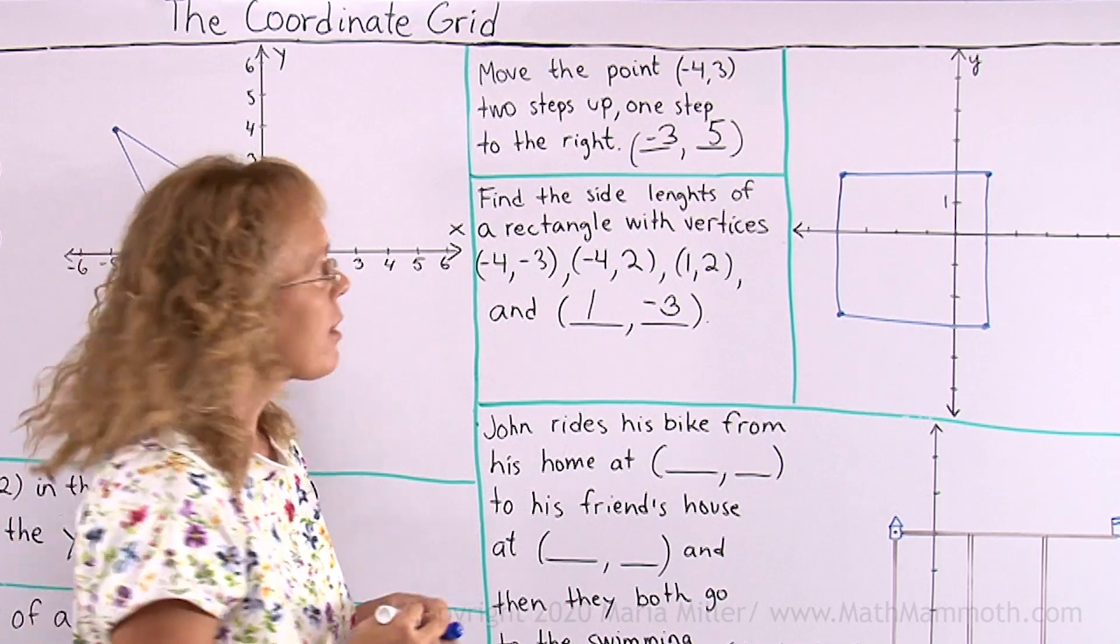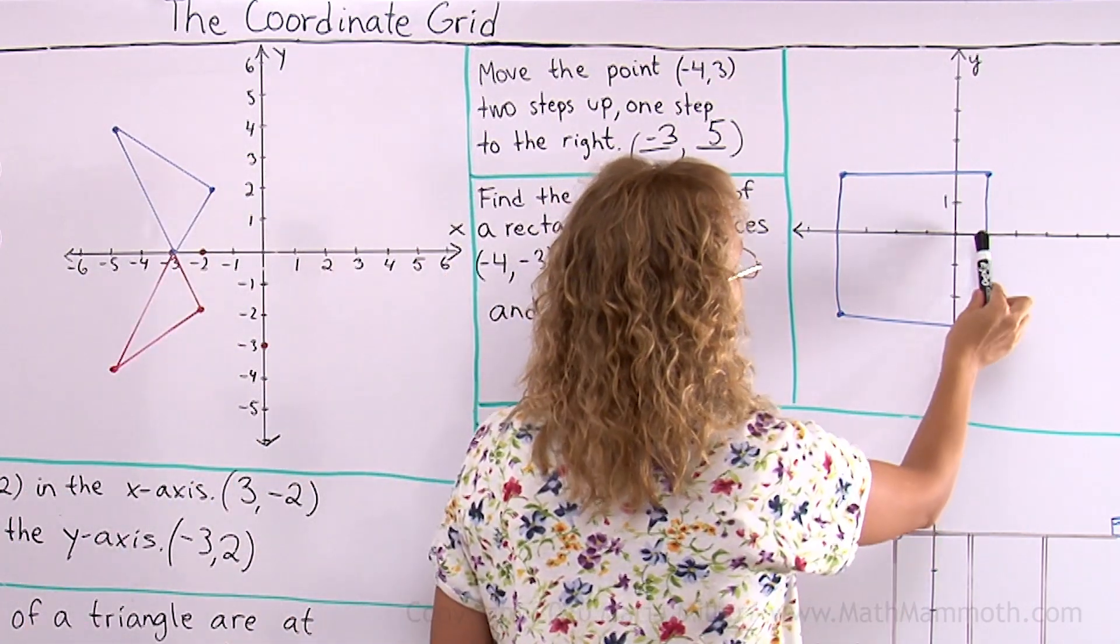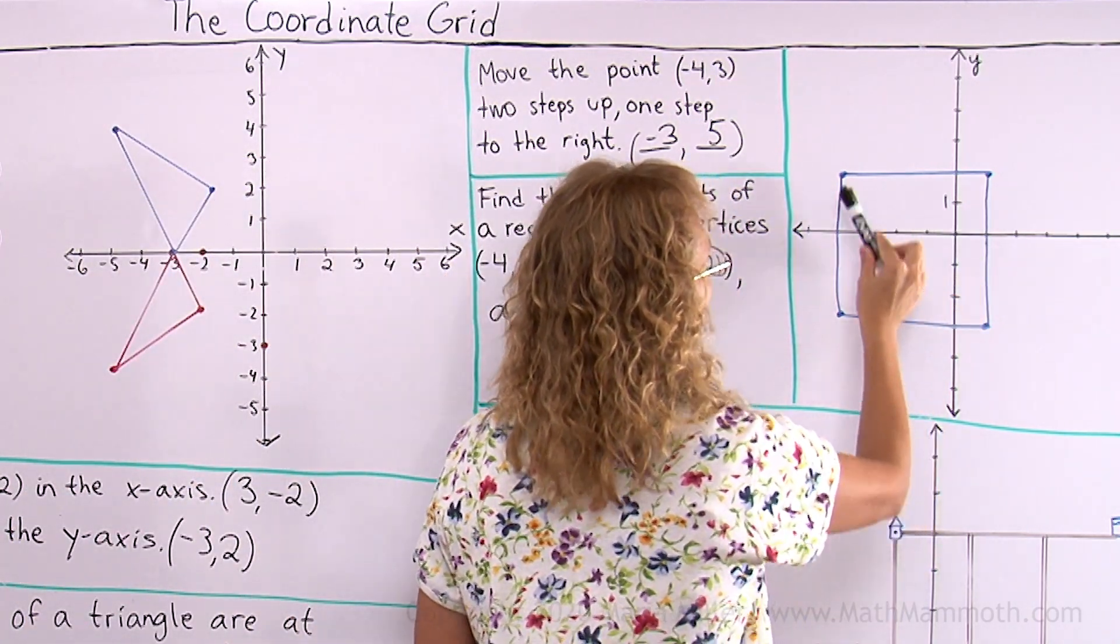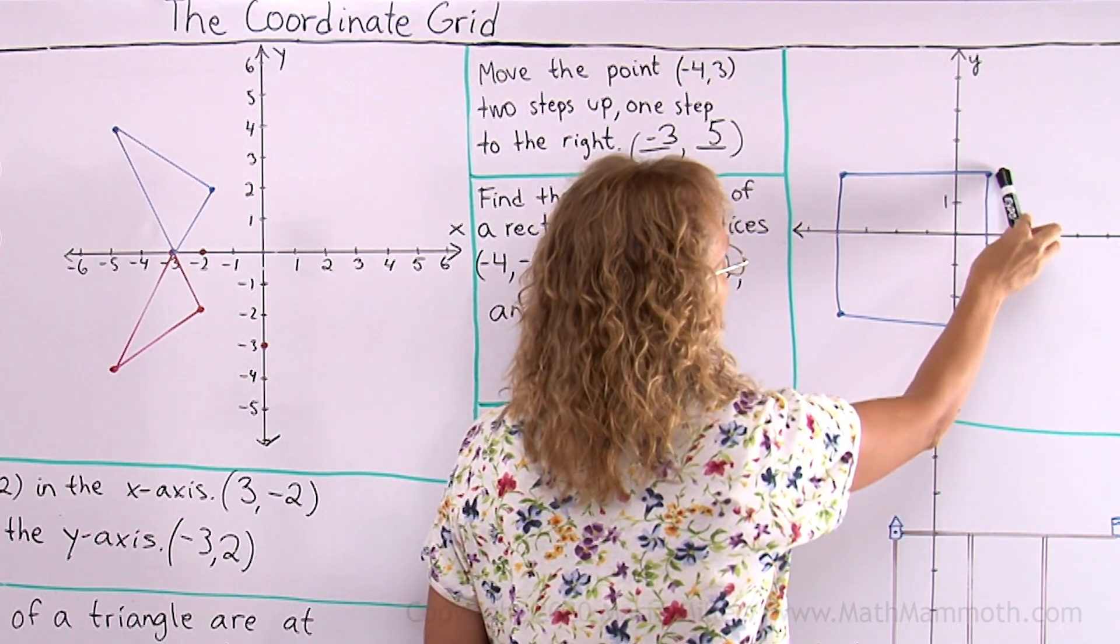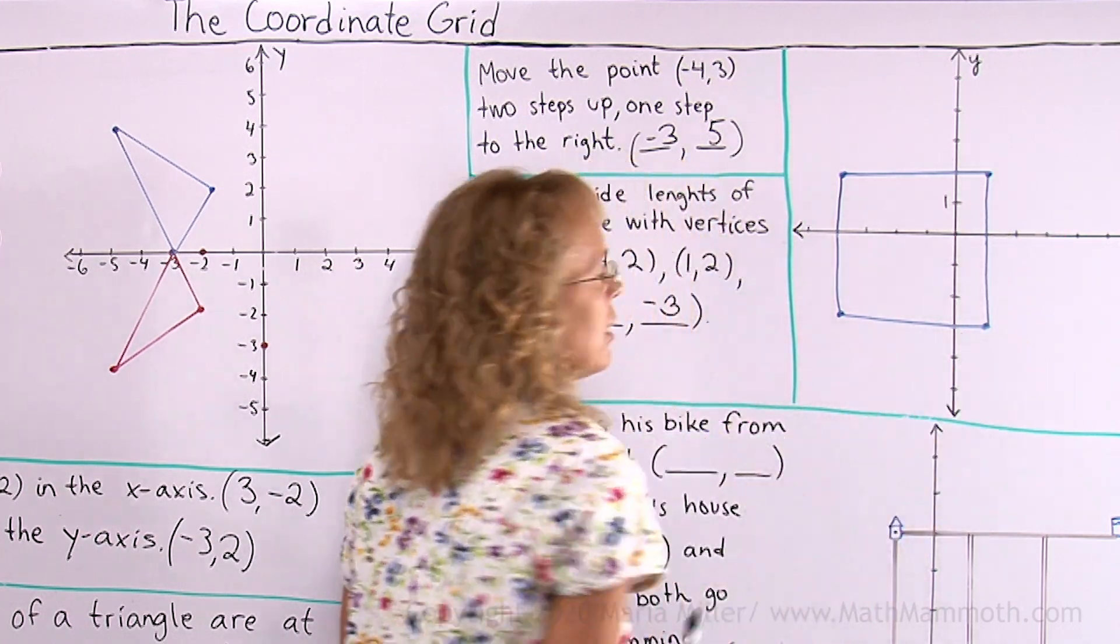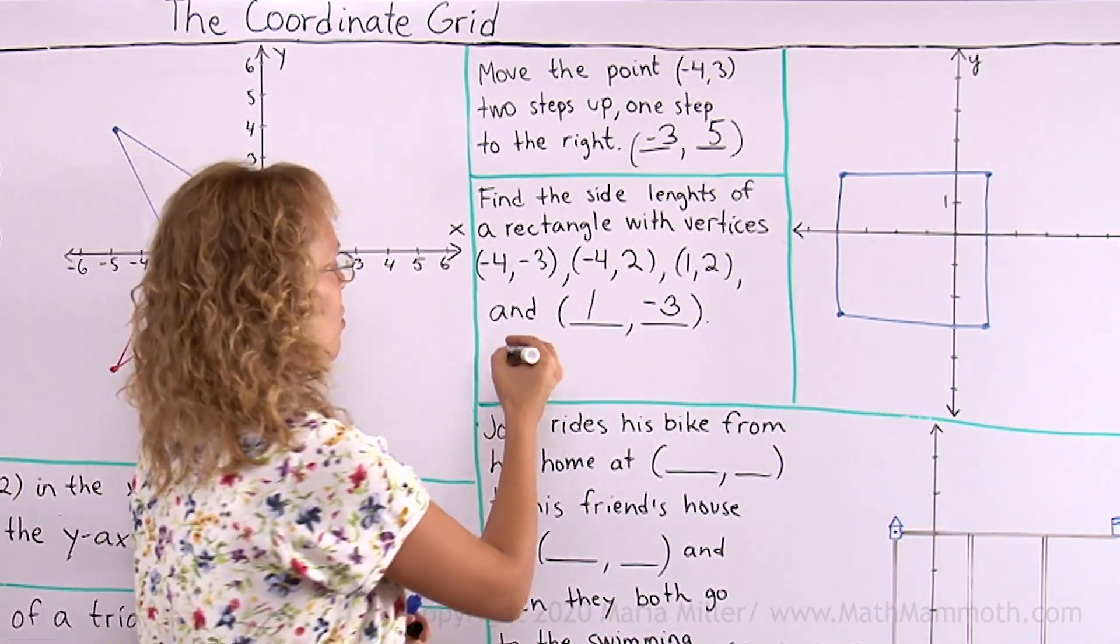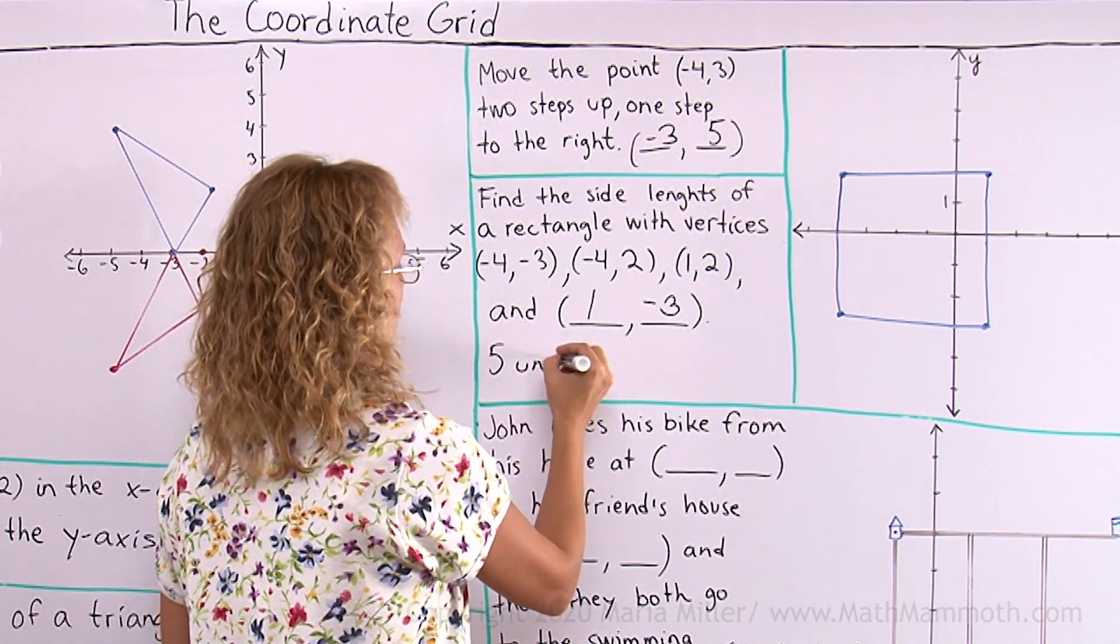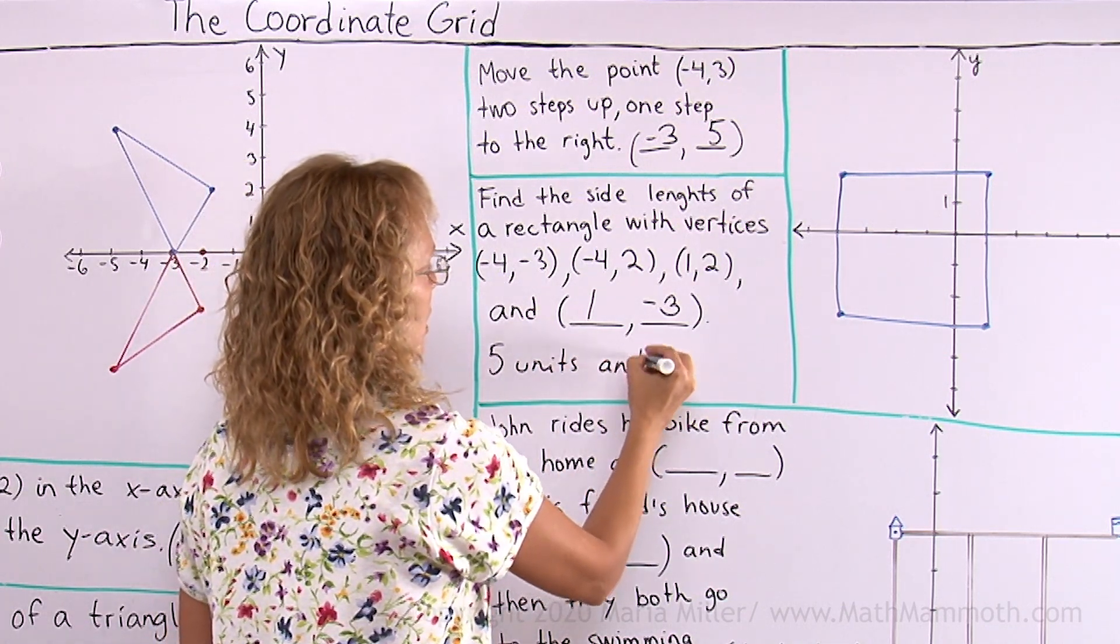Its side lengths I can just see over here. One, two, three, four, five. This side is five units and this side is one, two, three, four, five. Five units. It is actually a square. Five units and five units are the side lengths.